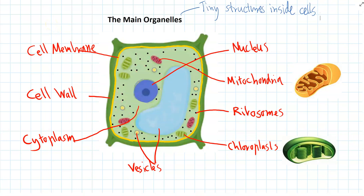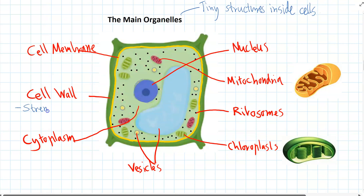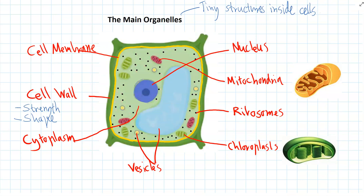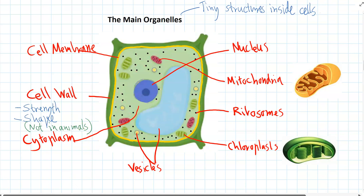Let's start at the outside. The cell wall is the outermost layer of a cell. It provides strength and shape to the cell, keeping it in one particular shape. Really importantly, animals don't have a cell wall, but most other kingdoms of life do have a cell wall on their cells.